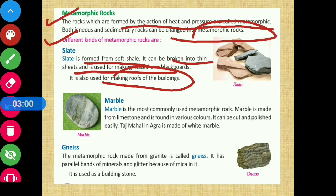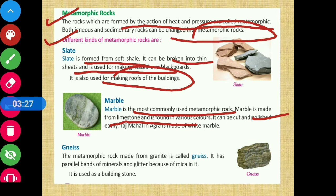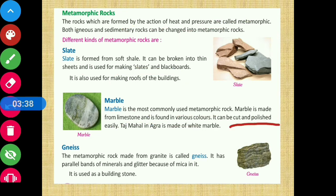Next is marble, the most commonly used metamorphic rock. Marble is made from limestone, which is a kind of sedimentary rock. Heat and pressure are applied to limestone to form marble. It is available in various colors and can be cut and polished easily. The Taj Mahal in Agra is made of white marble.